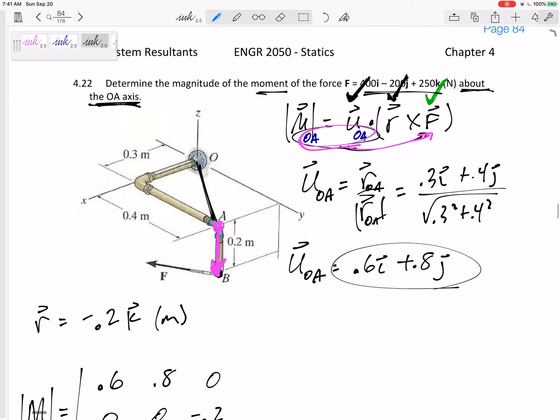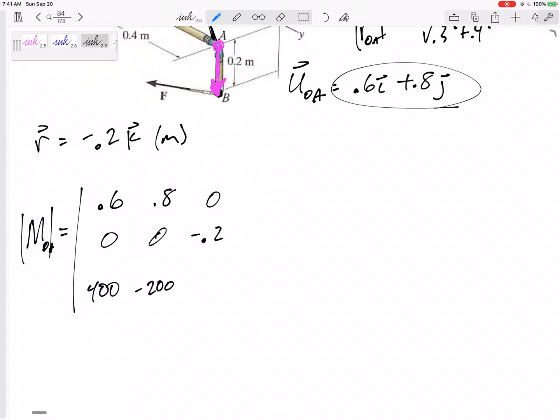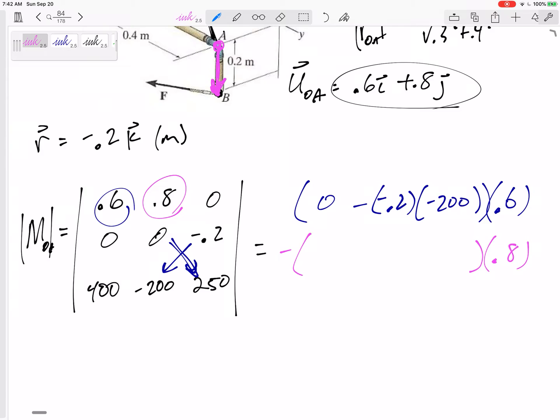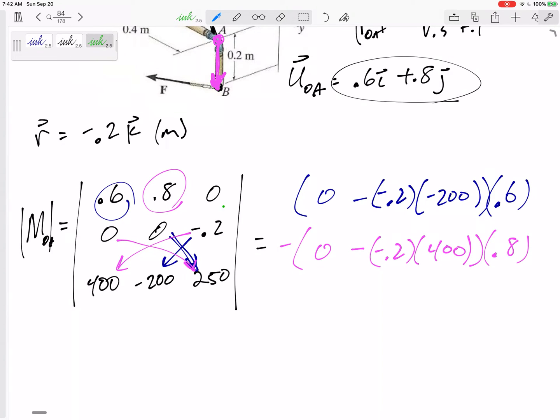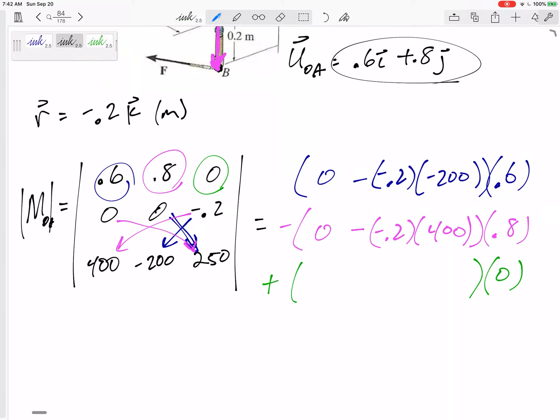So 0.6 times zero times 250, minus negative 0.2 times negative 200. There's so many opportunities to miss out on a negative or just to make a mistake. Negative negative, that's going to be a negative value for that one. And then minus 0.8 times that minus that, so this would be zero minus negative 0.2 times 400. And then this last one, it doesn't matter because I multiply it times zero.